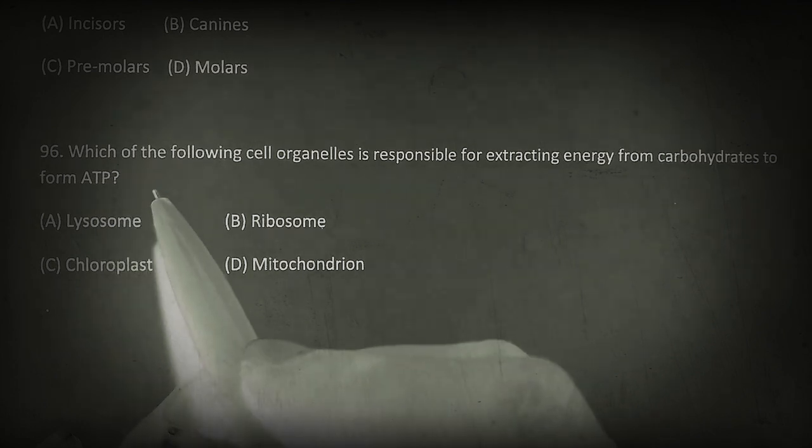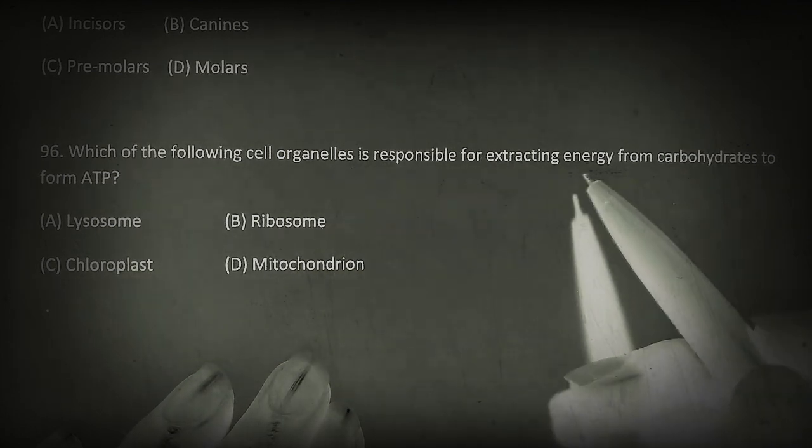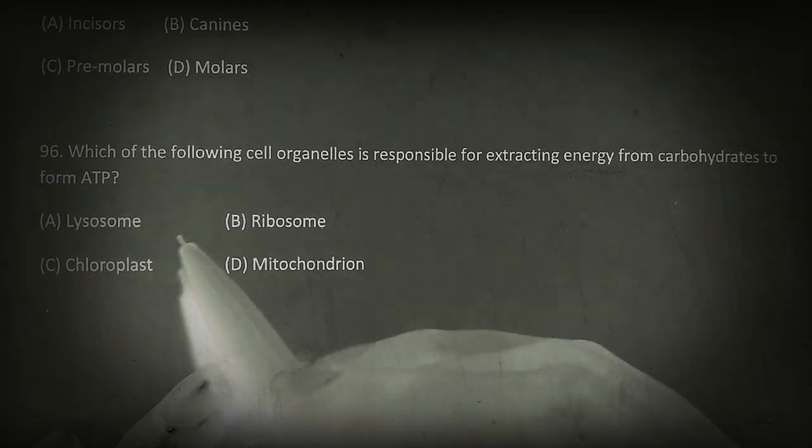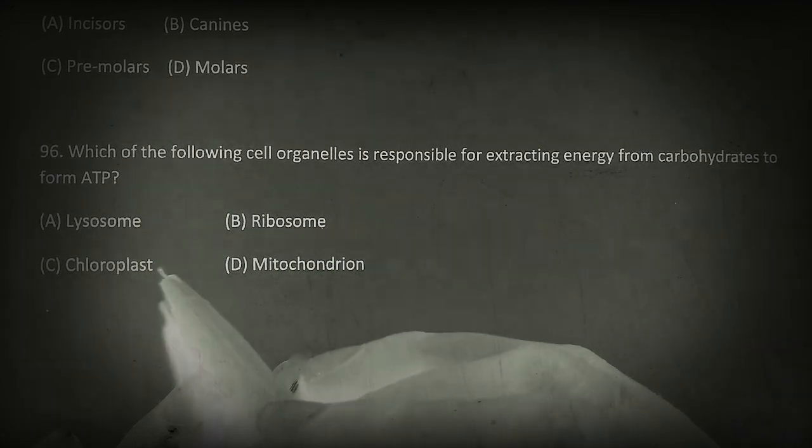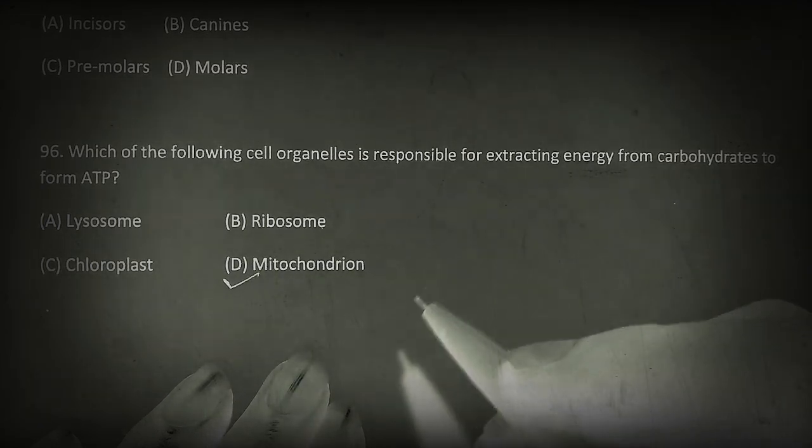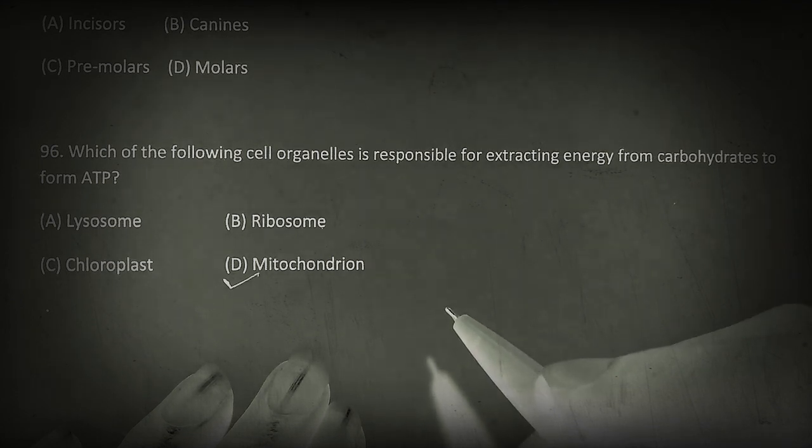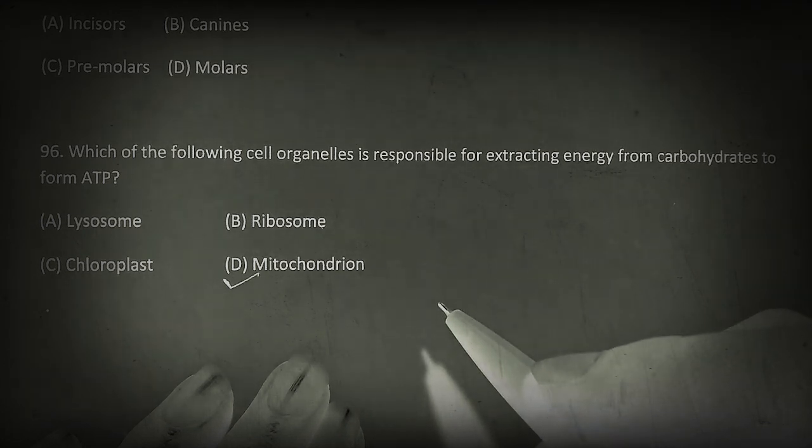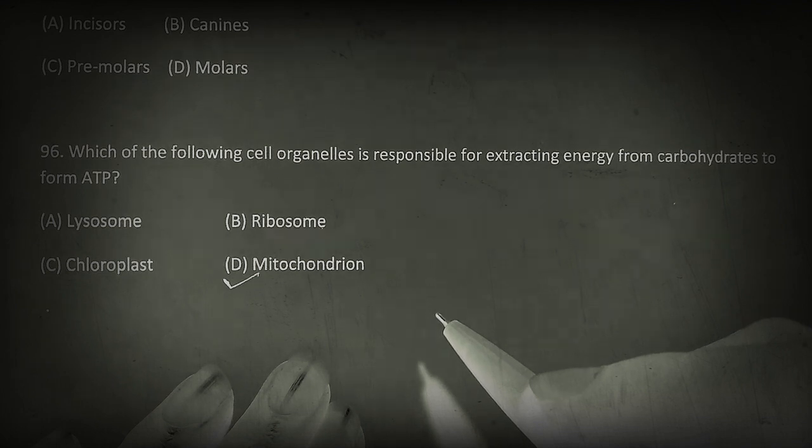Which of the following cell organelles is responsible for extracting energy from carbohydrates to form ATP? Lysosome, ribosome, chloroplast, or mitochondrion. The correct choice is mitochondrion. Mitochondria are miniature biochemical factories where foodstuffs or respiratory substrates are completely oxidized to carbon dioxide and water. The energy liberated in the process is initially stored in the form of reduced coenzymes and reduced prosthetic groups.